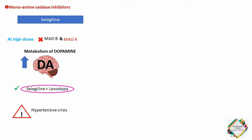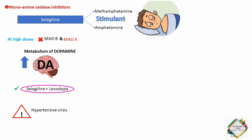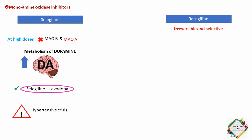Selegiline is metabolized to methamphetamine and amphetamine, whose stimulating properties may produce insomnia if the drug is administered later than mid-afternoon. Rasagiline is an irreversible and selective inhibitor of brain MAO type B with five times the potency of selegiline, and unlike selegiline, rasagiline is not metabolized to an amphetamine-like substance.